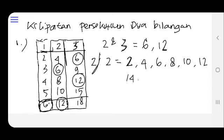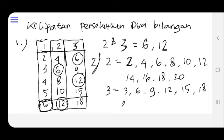2 kali 8 adalah 16, 2 kali 9 adalah 18, dan 2 kali 10 adalah 20. Sekarang angka 3 nya ya: 3 kali 1, 3 kali 2 adalah 6, 3 kali 3 adalah 9, 3 kali 4 adalah 12, 3 kali 5 adalah 15, 3 kali 6 adalah 18, 3 kali 7 adalah 21.